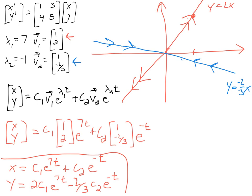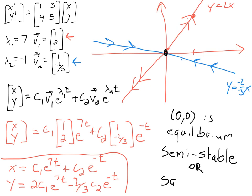The origin is an equilibrium point. Since there are some directions that head straight into it and some directions that head away from the origin, we would say that this is a semi-stable equilibrium, also sometimes called a saddle point.